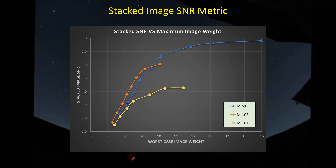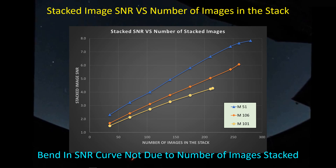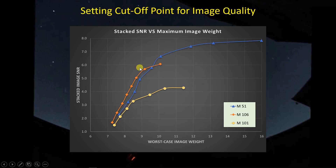To test whether the bend is due to diminishing returns from having so many images, I plotted the lines against total number of images in the stack instead of worst-case image weight. And we don't see that bend here - meaning the bend has nothing to do with the number of images in the stack. This graph says keep adding images and SNR will improve; we haven't hit square-root diminishing returns yet. So the bend in the SNR curve is because we keep adding poorer and poorer quality images - and that's something we want to know.